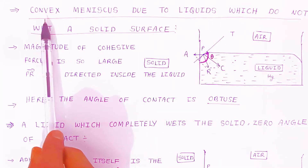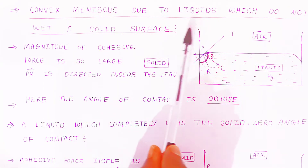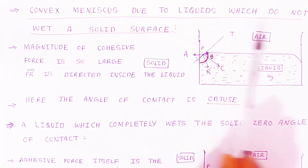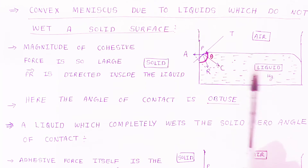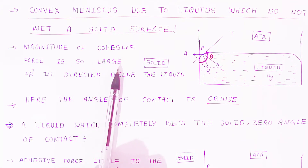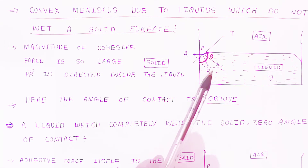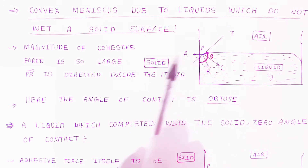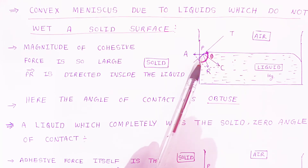The second type is the convex meniscus. A convex meniscus forms for liquids which do not wet the solid surface — the liquid does not attach to or wet the beaker surface. Mercury mostly forms a convex meniscus. Here the magnitude of cohesive force is very large and the resultant PR is directed inside the liquid. When the resultant is inside the liquid, a convex meniscus is formed.